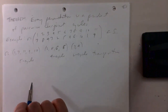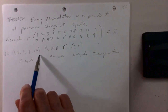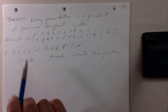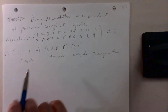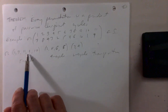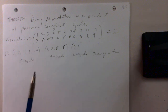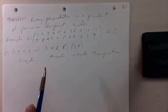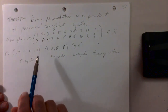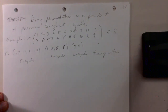This algorithm always works: given any permutation, you can always decompose it into a product of disjoint cycles. Since disjoint cycles commute, the representation is unique up to the order in which you write the cycles — just as 6 equals 2 times 3 or 3 times 2. So every permutation is a product of disjoint cycles.